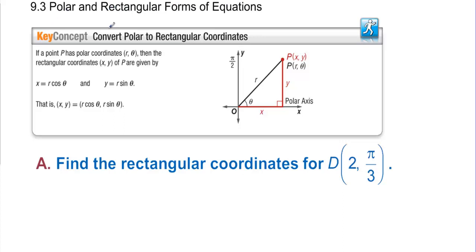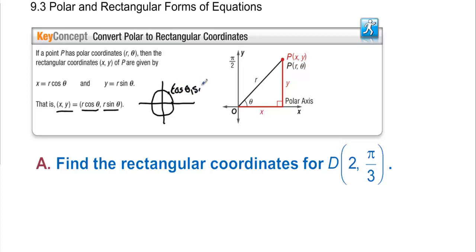9.3 Polar and Rectangular Forms of Equations. Convert polar to rectangular coordinates. If a point P has polar coordinates r, theta, then the rectangular coordinates x, y of P are given by x equals r cosine theta and y equals r sine theta. This comes from the unit circle — on the unit circle the radius is 1, so we use cosine theta for x and sine theta for y. If the radius is not 1, we just multiply by cosine and sine.